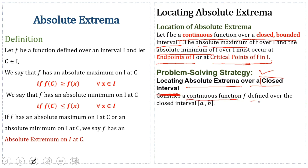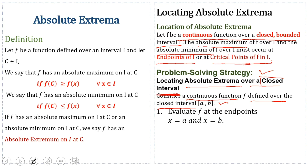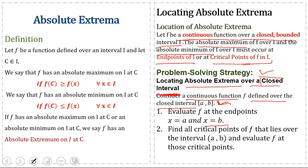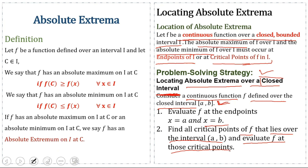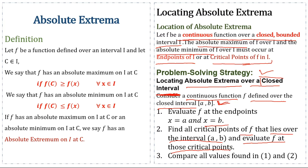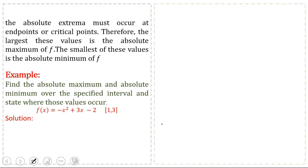Consider a continuous function f defined over the closed interval [a, b]. Step 1: Evaluate the function f at the endpoints x = a and x = b. Step 2: Find all critical points of the function that lie over the open interval and evaluate the function at those critical points. Step 3: Compare all values found in steps 1 and 2. The absolute maximum and absolute minimum must occur at the endpoints or the critical points.